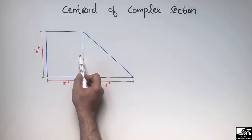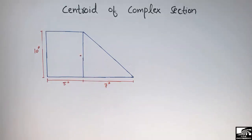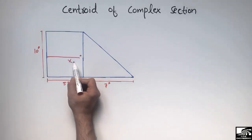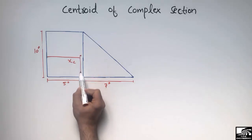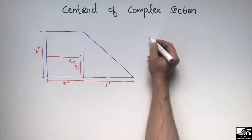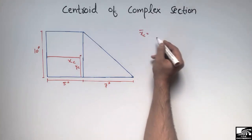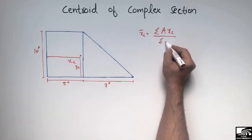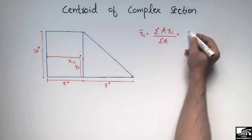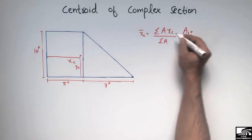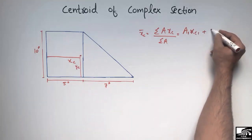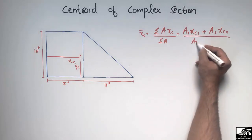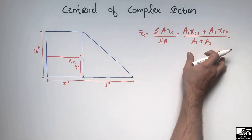We have to find the coordinates of this centroid of the complex shape. To find the x-coordinate x_c bar, we use the formula: summation of A times x_c, divided by summation of A. Expanded, this is (A1 × xc1 + A2 × xc2) divided by (A1 + A2). I will explain this formula in detail while solving the problem.